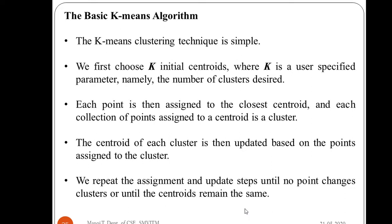In k-means clustering, we first choose k initial centroids, where k is a user-specified parameter — the number of clusters desired. It may be 5, 10, or 15 clusters, defined by the user based on the data. Each point is then assigned to the closest centroid, and each collection of points assigned to a centroid forms a cluster. The centroid of each cluster is then updated based on the points assigned to it. We repeat the assignment and update steps until no point changes clusters or until centroids remain the same.